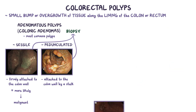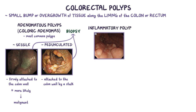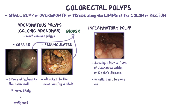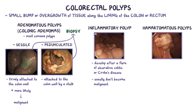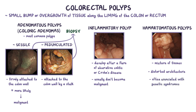Another type of polyp is an inflammatory polyp, and these typically develop after a flare of ulcerative colitis or Crohn's disease. They usually don't become malignant and don't require excision. A final group are hamartomatous polyps, which are made up of a mixture of tissues and have a distorted architecture. Hamartomatous polyps are often associated with genetic syndromes like juvenile polyposis and Peutz-Jeghers syndrome.